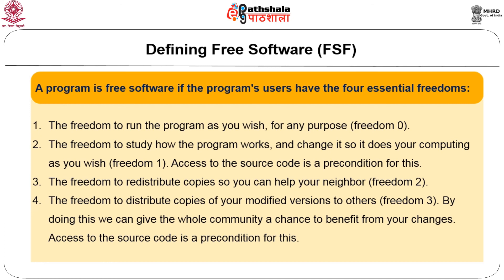Freedom number 0 is the freedom to run the program as you wish, for any purpose. Freedom number 1 is the freedom to study how the program works and change it — access to source code is a precondition. Freedom number 2 is the freedom to redistribute copies so you can help others. Freedom number 3 is the freedom to distribute copies of your modified versions to others, giving the whole community a chance to benefit from your changes. In all these freedoms, access to source code is a precondition.